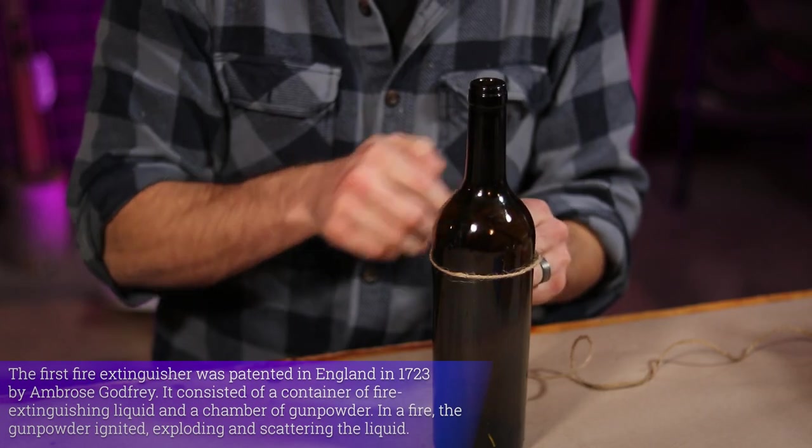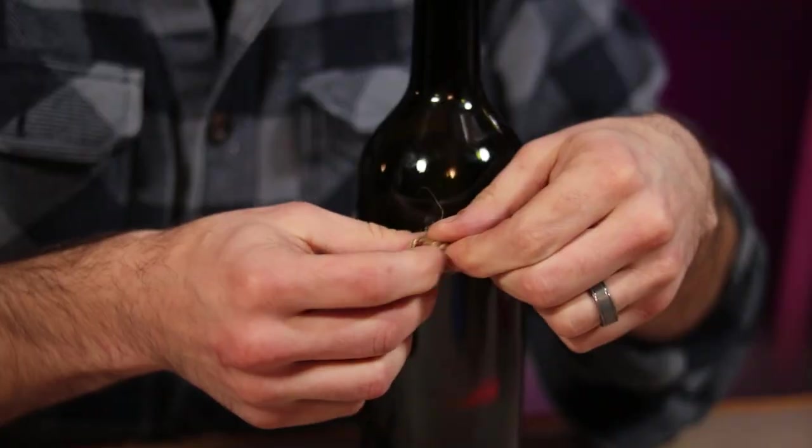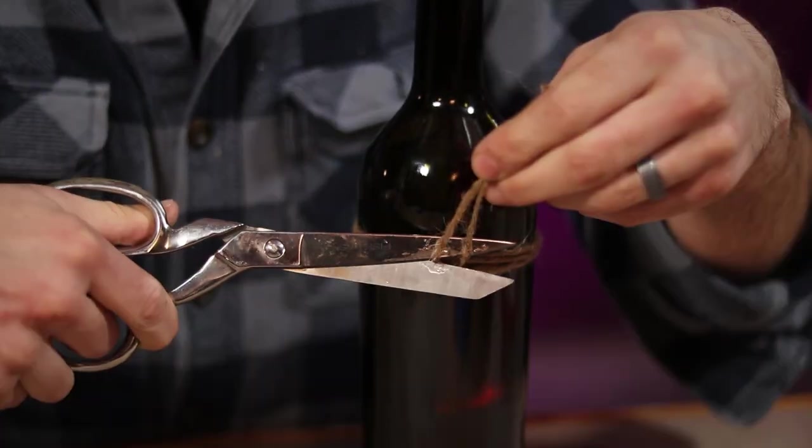Alright, so start by wrapping your cordage around the bottle right where you want your break to happen. After a few wraps, tie it in place and snip off any of the excess tails.